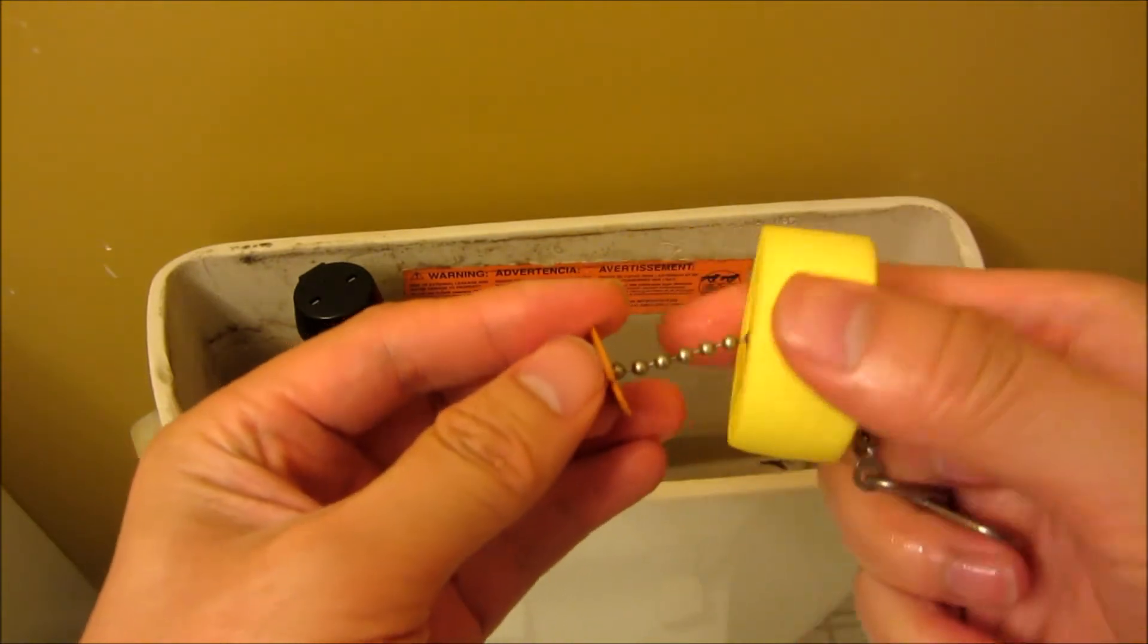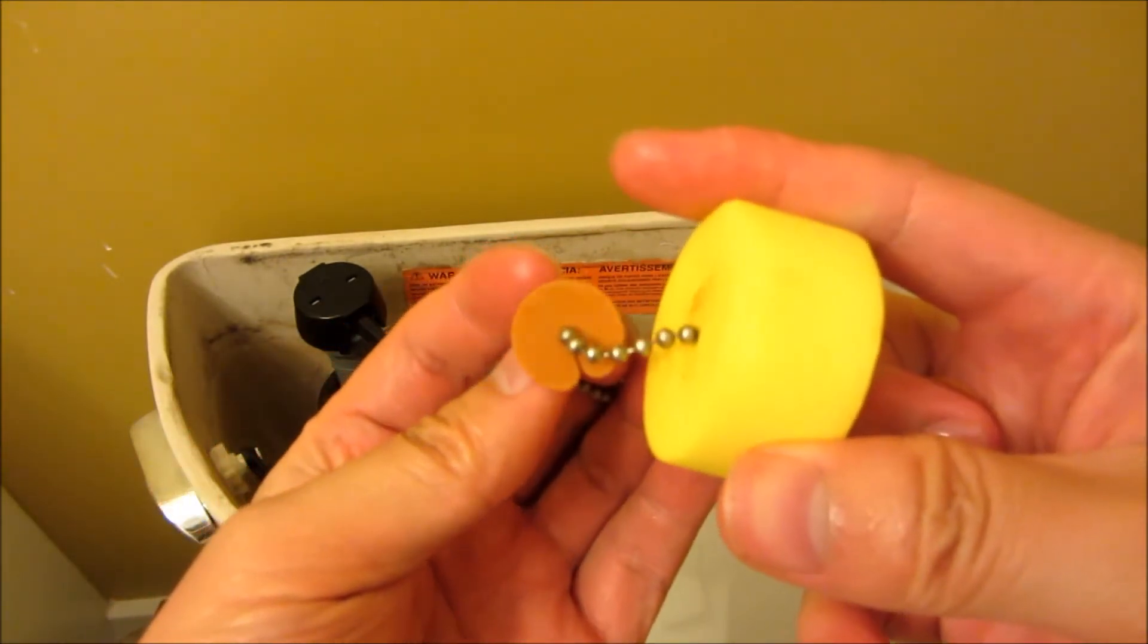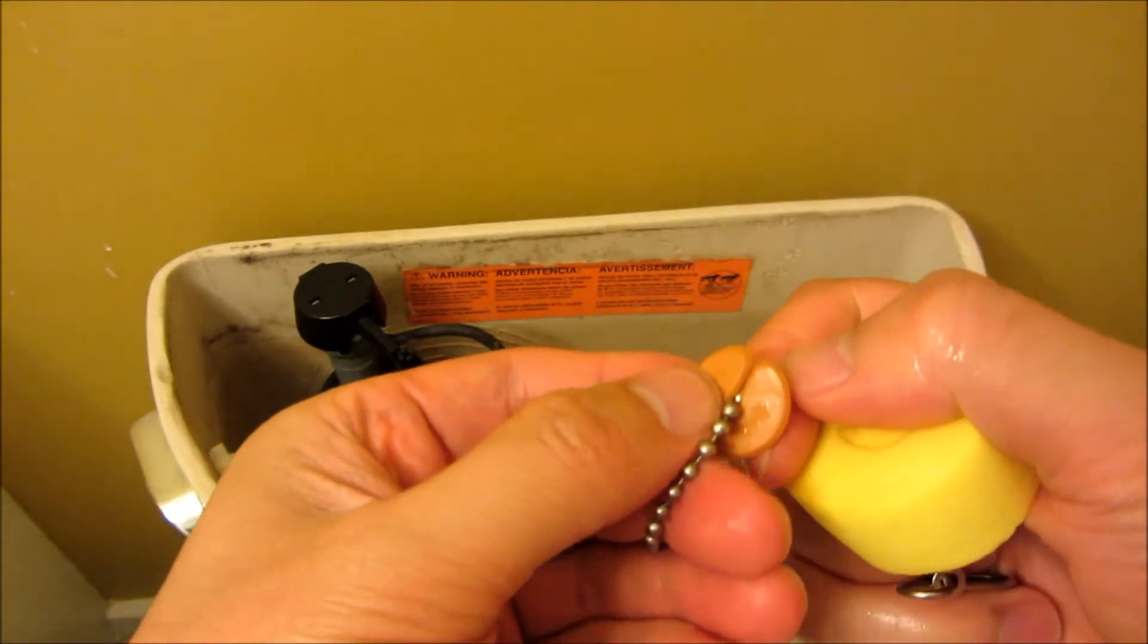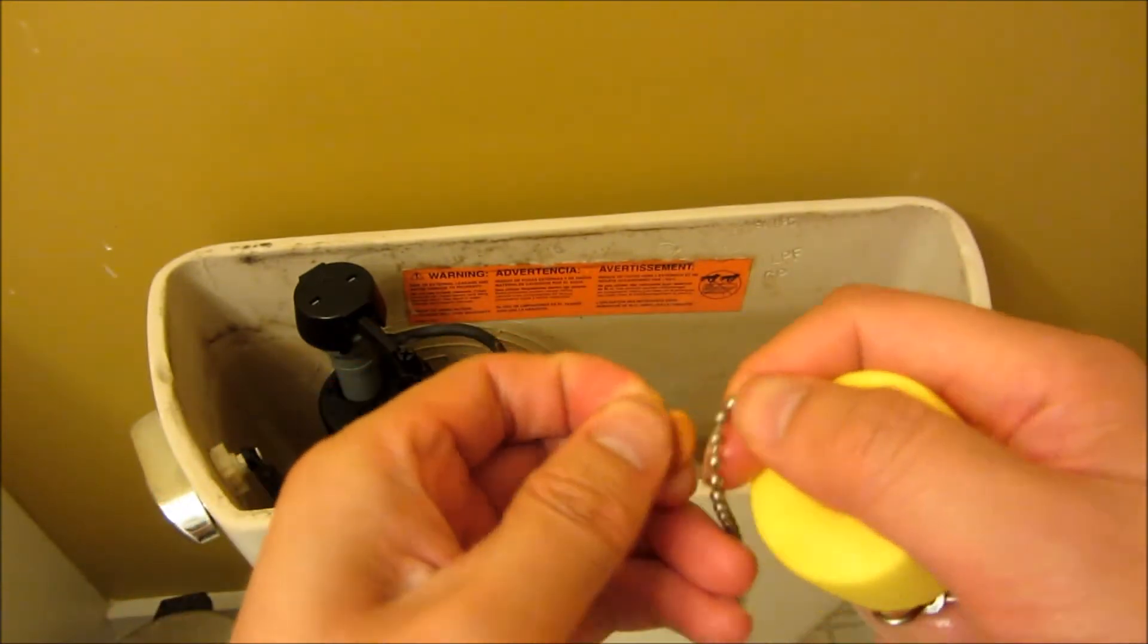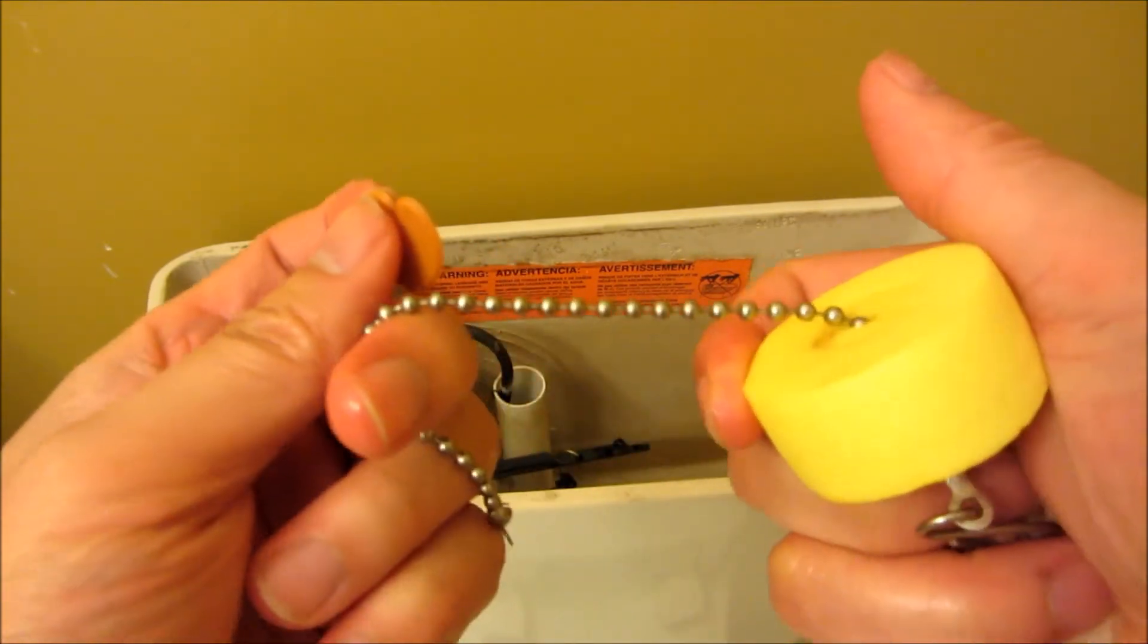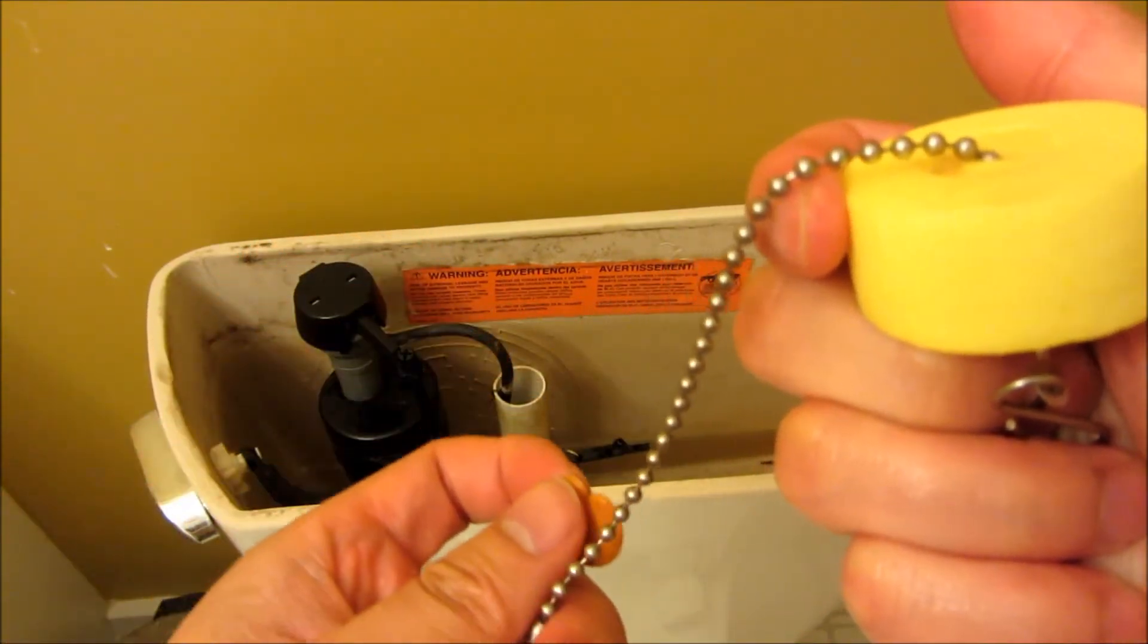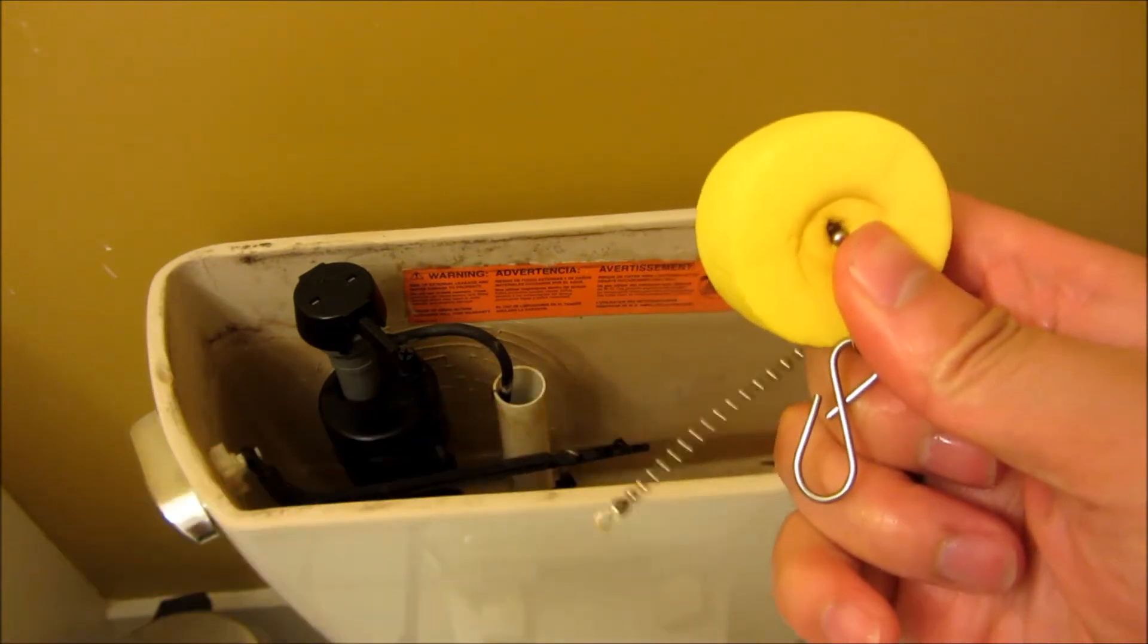And simply move your float up and down based on that. Again, this is less convenient because you actually have to remove these plastic placeholders and put it along the right length of chain. But that's the other type of float that you might run into.